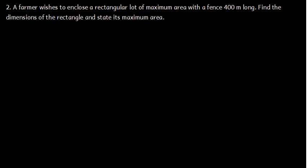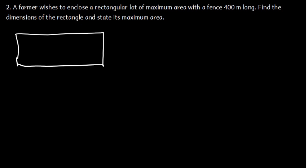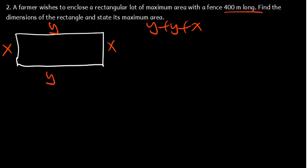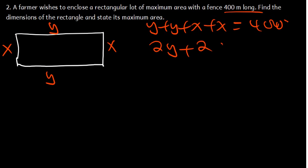They want us to find the dimensions of the rectangle. Let's say this is our rectangle, where one side is Y and the adjacent side is X. We know the perimeter is found by adding all sides: Y + Y + X + X = 400. So 2Y + 2X = 400. That is the total perimeter.